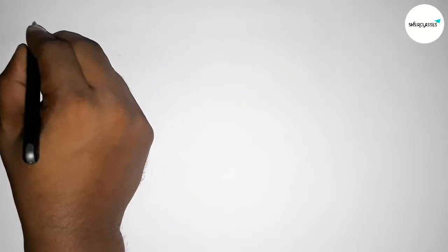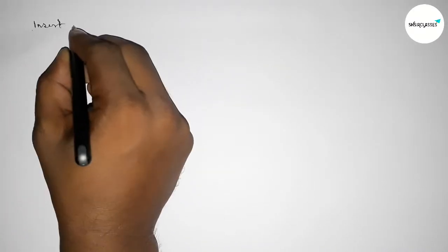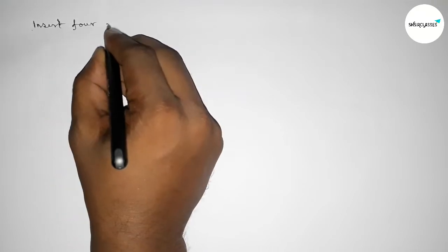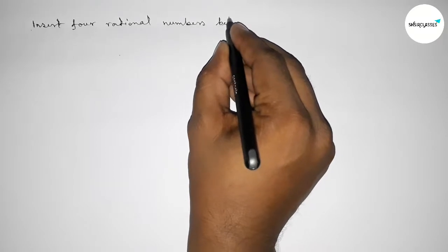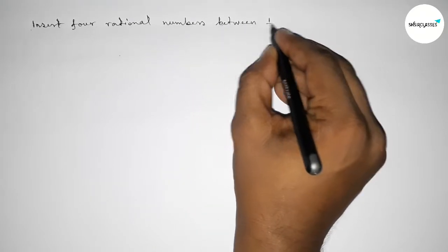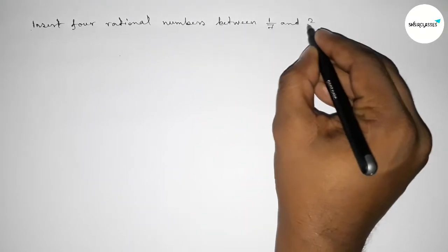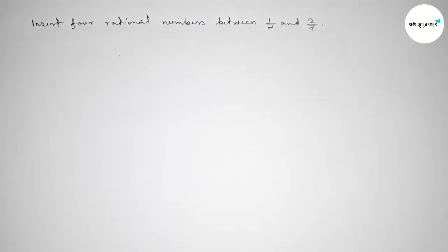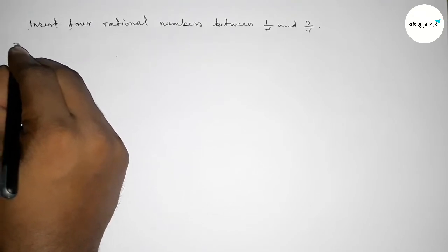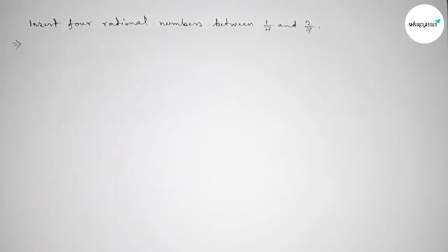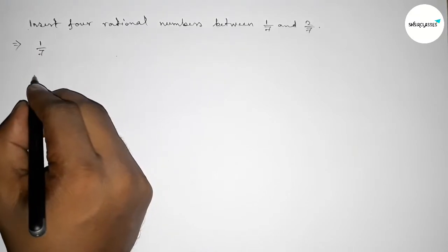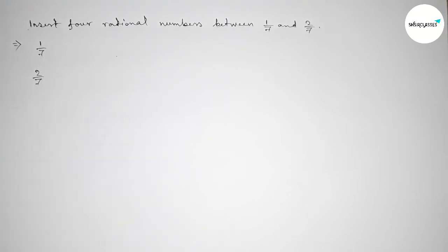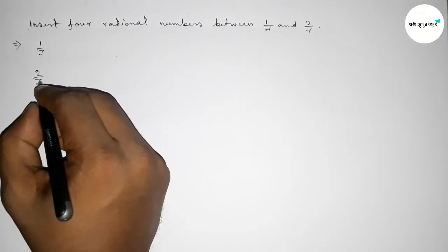Hi everyone, welcome to SI share classes. Today in this video we have to find four rational numbers between 1 over 7 and 2 over 7 in an easy way. So let's start the video. First of all, let's solve this problem. Here given two numbers: first one 1 over 7 and 2 over 7.